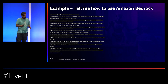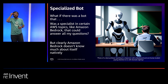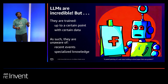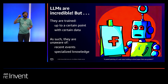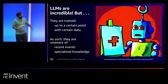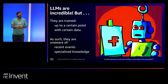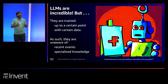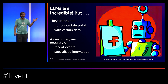The idea was: what if there was a bot that was a specialist in a certain AWS topic like Amazon Bedrock, that could answer all my questions? But clearly Amazon Bedrock, at least at first, couldn't help me with that. The problem though wasn't Amazon Bedrock itself — Amazon Bedrock is awesome. LLMs are incredible, but they have limitations. They are trained up to a certain point with certain data, so if you're asking questions about a topic that's too recent or too specific, they simply don't know the answer and can keep giving you really weird responses. This isn't an Amazon Bedrock limitation — it's an LLM limitation.